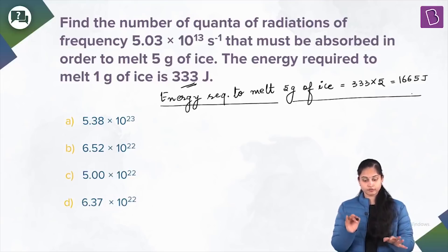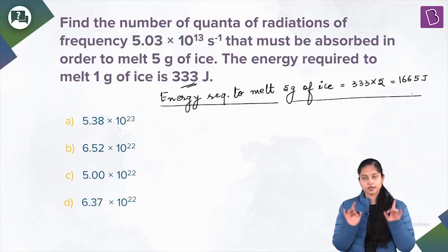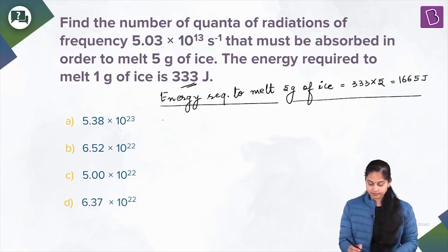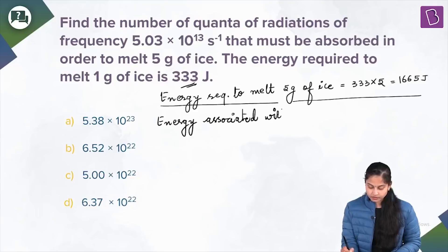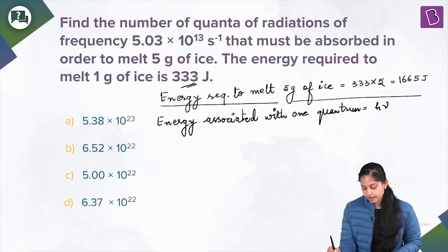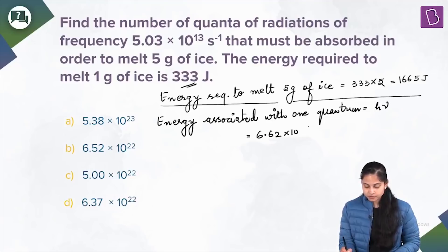We are given the frequency and have to find the number of quanta that must be absorbed to melt 5 grams of ice. Energy associated with 1 quantum equals h·ν. Planck's constant h = 6.62 × 10⁻³⁴ joule·second.